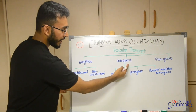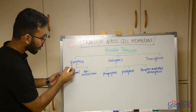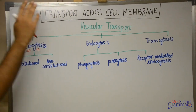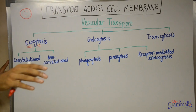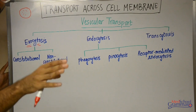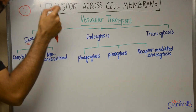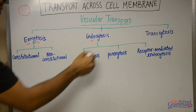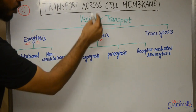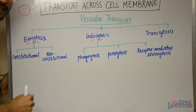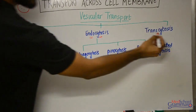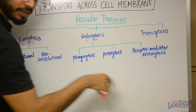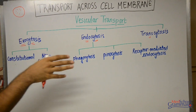Vesicular transport is of three types: exocytosis, endocytosis, and transcytosis. Exo means outwards and cytos means cell, so exocytosis is movement of the vesicle from inside to outside the cell. Endo means inwards, so endocytosis is movement of vesicles from outside to inside the cell. Trans means across, so transcytosis means movement of vesicles within the cell.